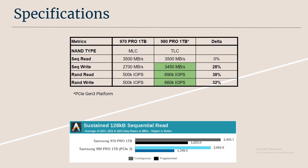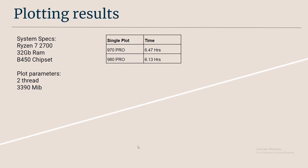In this chart there are two different types of speed: contiguous and fragmented. Without getting into too much detail, contiguous is more of a best-case scenario and fragmented is worst-case scenario. For plotting it's probably more worst-case since it goes on for a couple of hours. You can see that the 970 Pro definitely has the advantage in sustained speed.